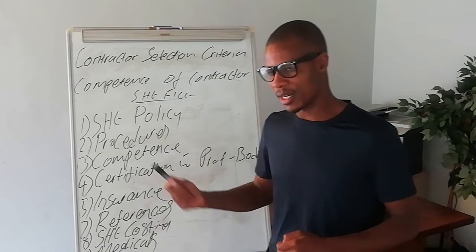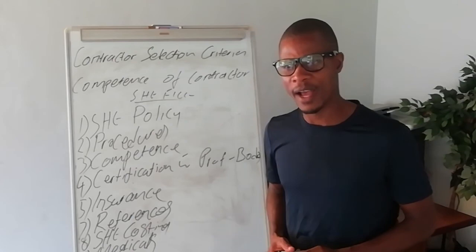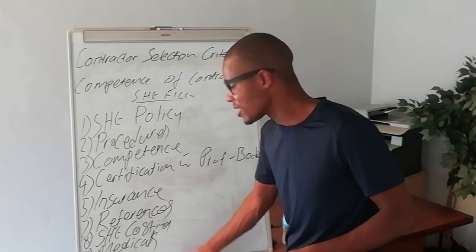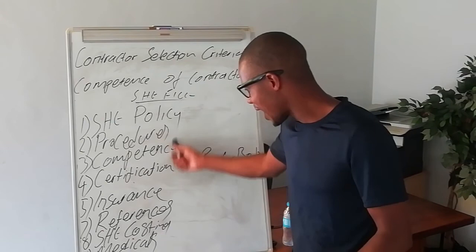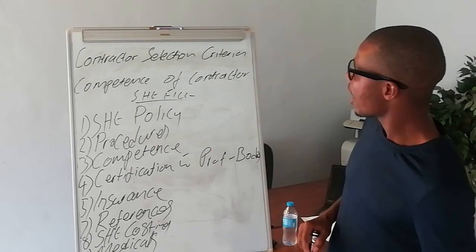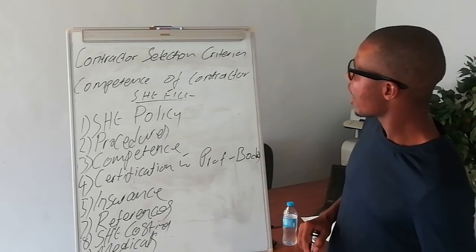So there is no need to go and read contractor selection criteria or SHE competence separately. If you know how to develop the safety file, the information that you normally put on the content page of your safety file — those are actually the things that will be inside your safety file that you submit, and these are the points that are also required for contractor selection criteria as well as the competence of your contractor. Thank you so much.